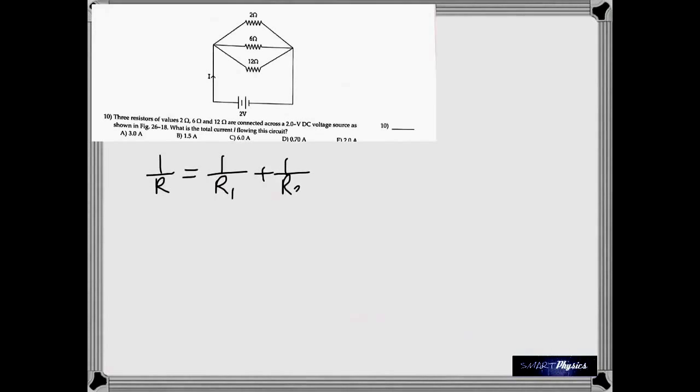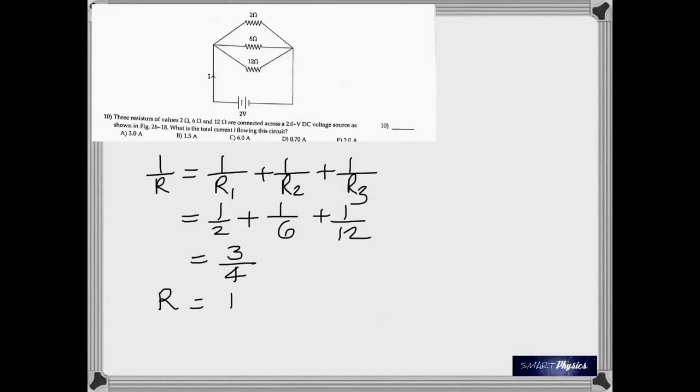Here once again you have a parallel arrangement of three resistances. So use the equation. The lowest common multiple in this case is 12. So you get 3 over 4. And on reversing it, you get the equivalent resistance as 4 by 3. And current is voltage over resistance. So that is 2 over 4 by 3. That gives you 1.5 ampere.